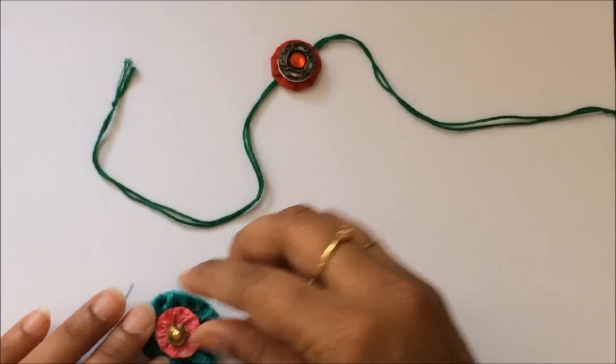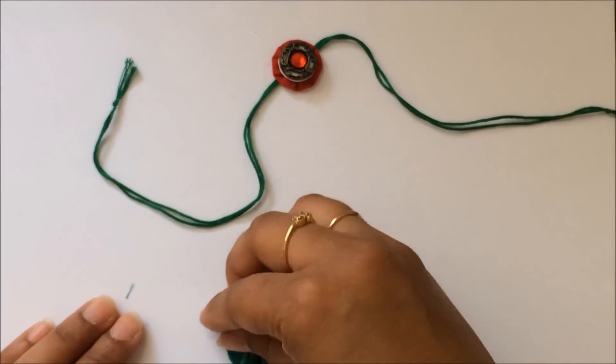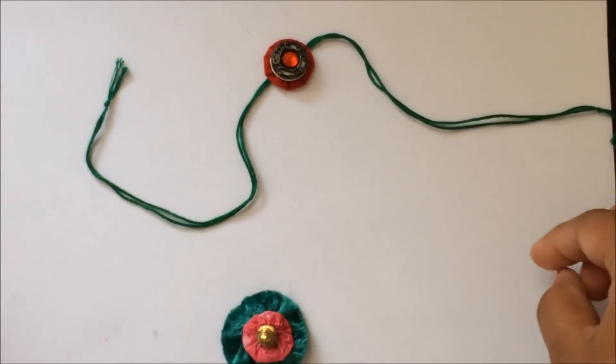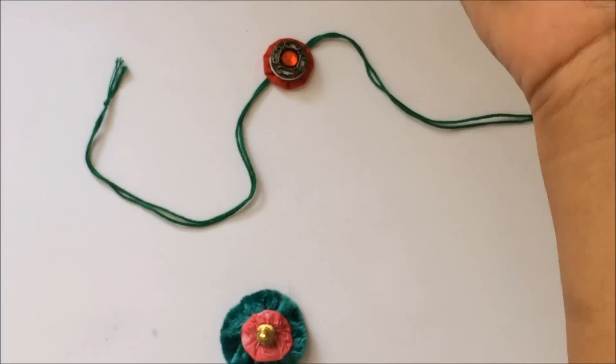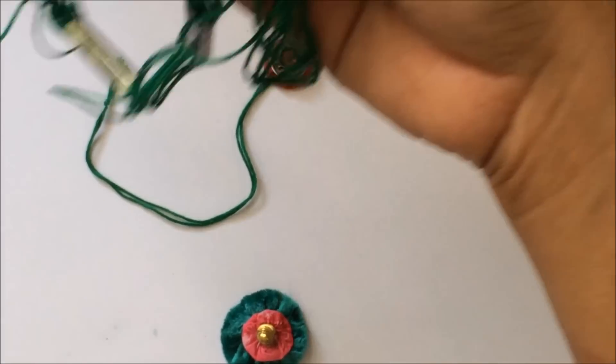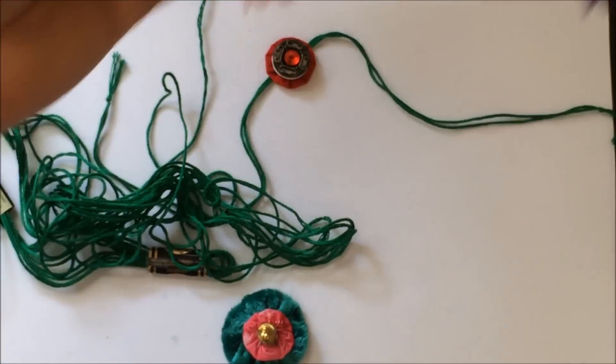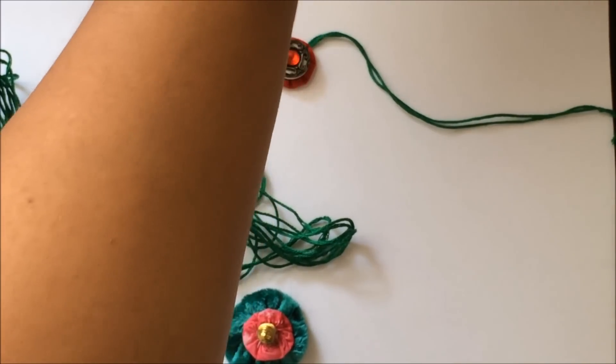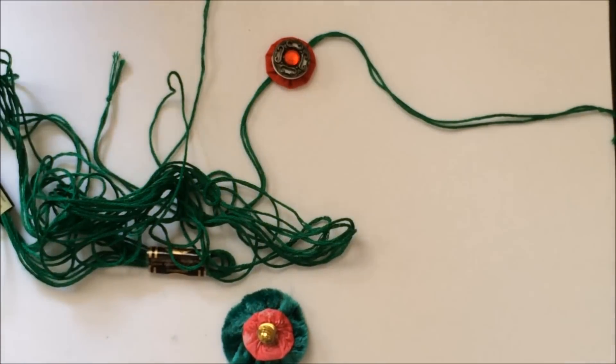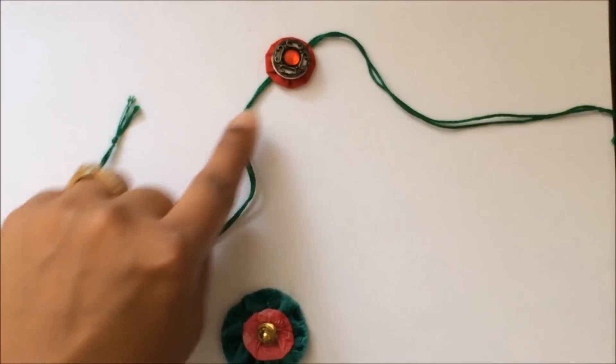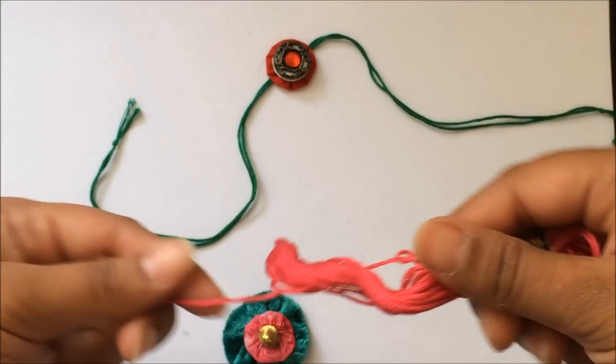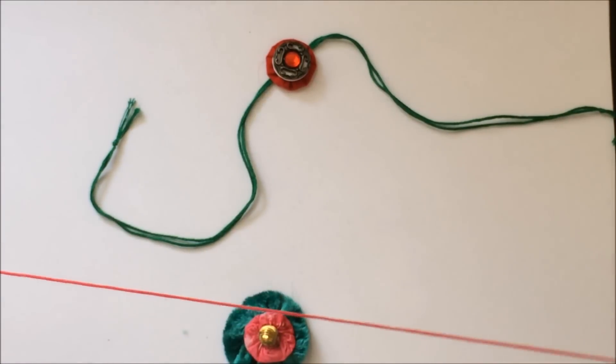That's the center of the Rakhi. Now I'm gonna add a thread. The threads I used for this one are just cotton embroidery threads. These are best because they are very sturdy. For this one I had used green, and now for this one I'm thinking to use a pink one.